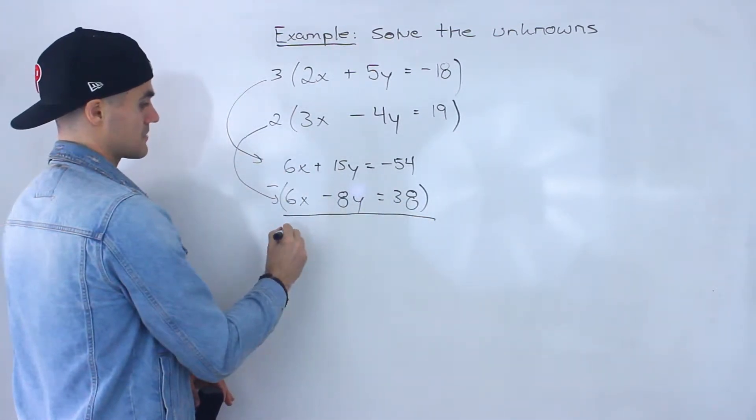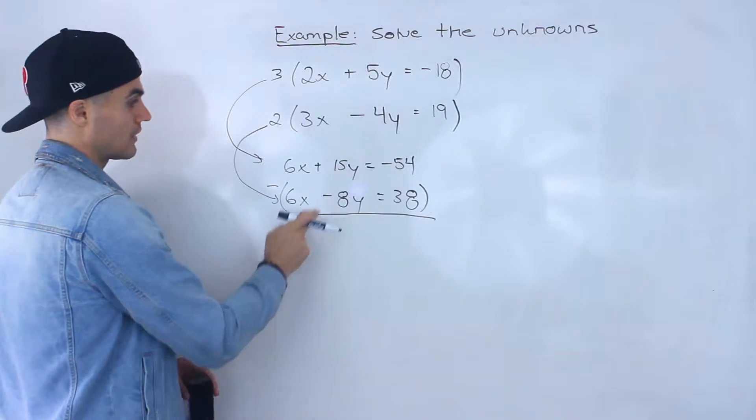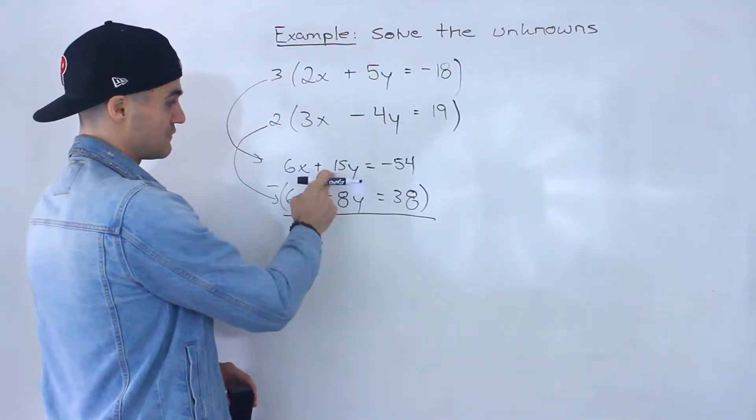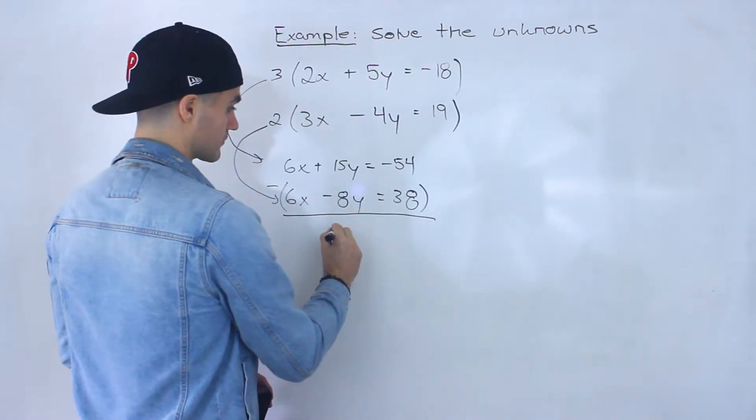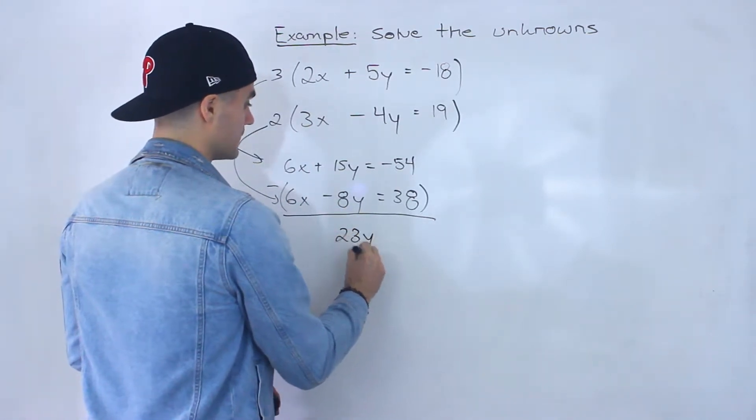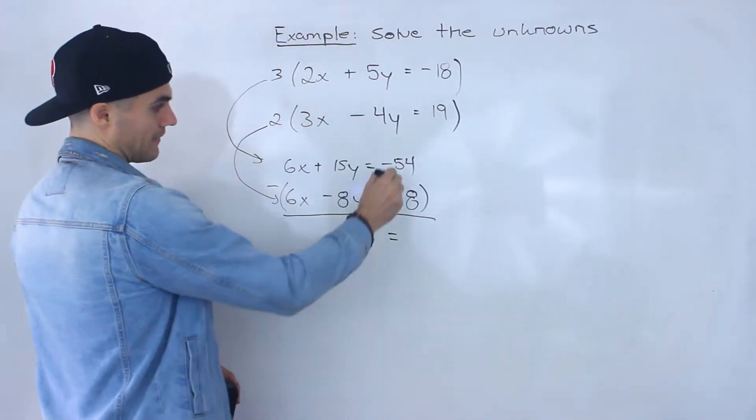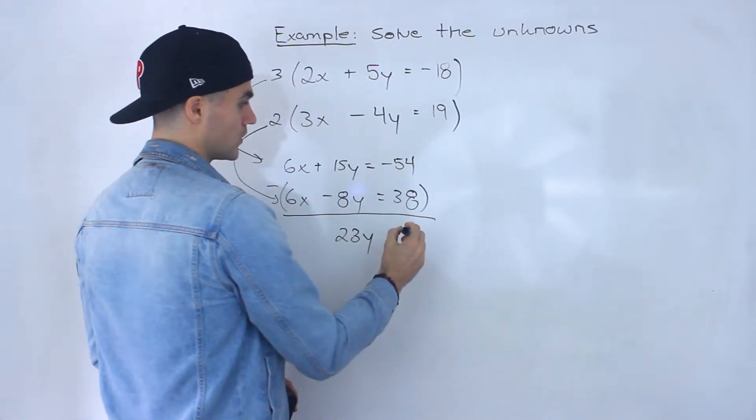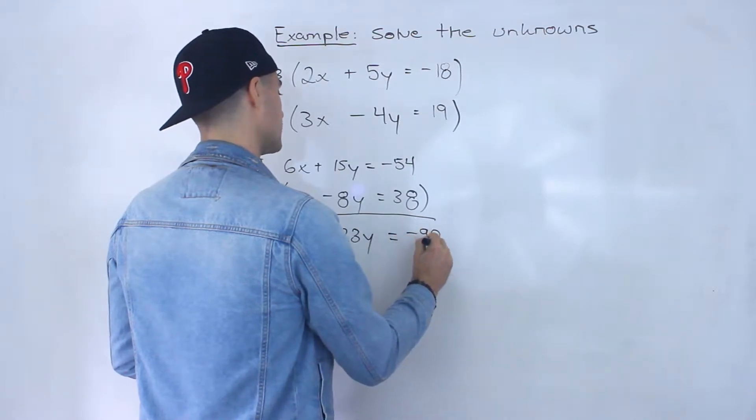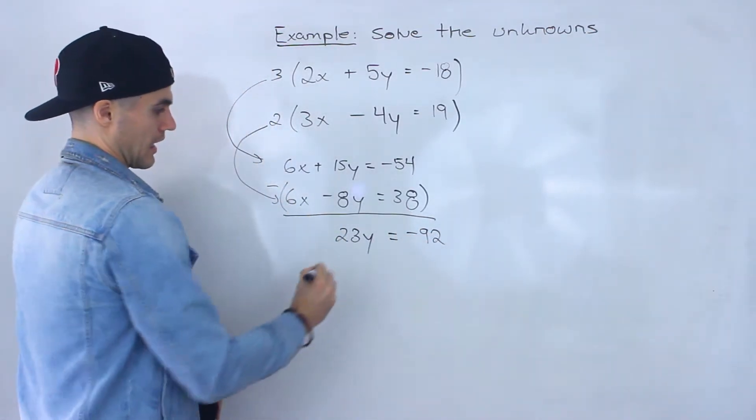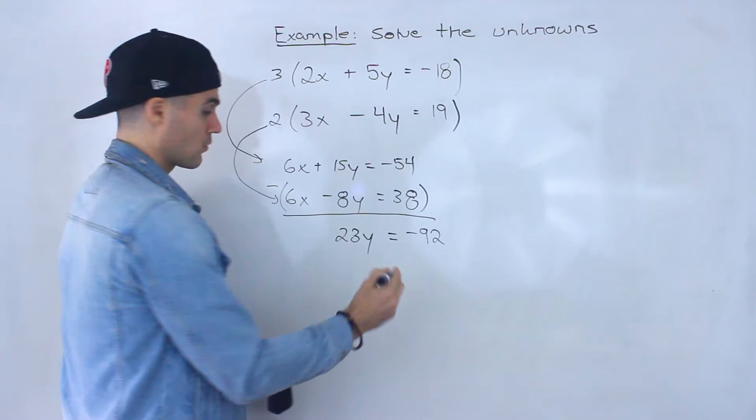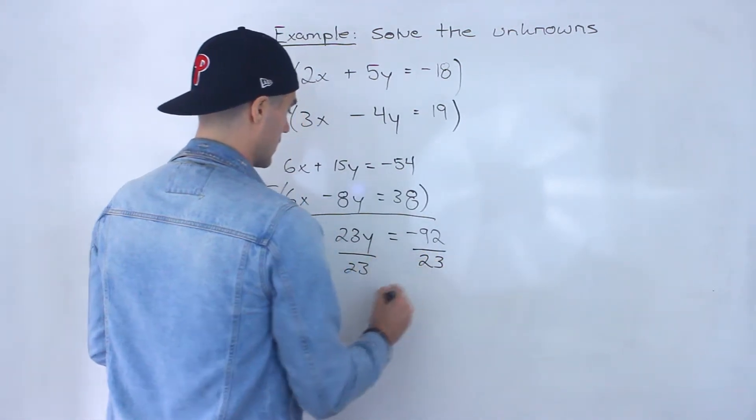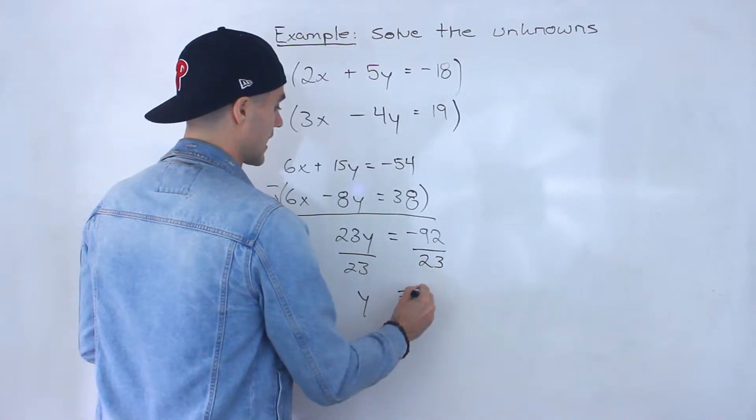So 6x minus 6x that ends up being just 0x we don't have to put anything. 15y minus negative 8y is like 15y plus 8y which would give us 23y. And then this over here negative 54 minus 38 would give us negative 92 and then notice now we could just solve for y. We could divide this by 23 this by 23 and we would end up getting y equals negative 4.